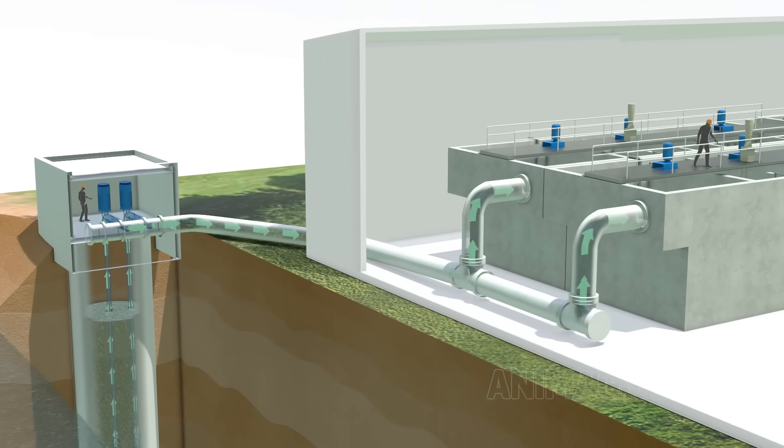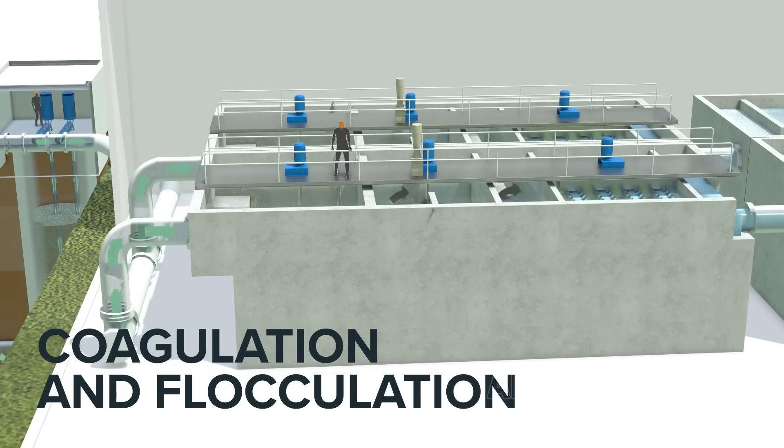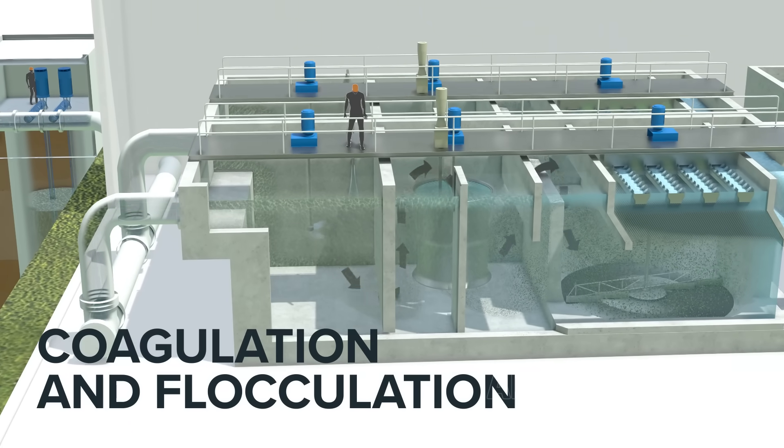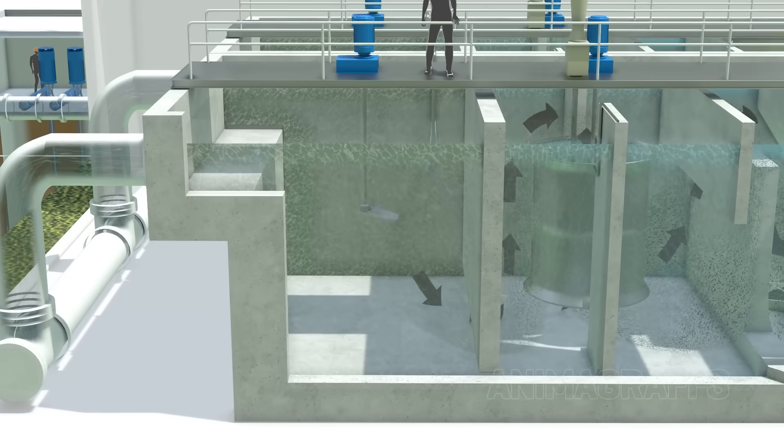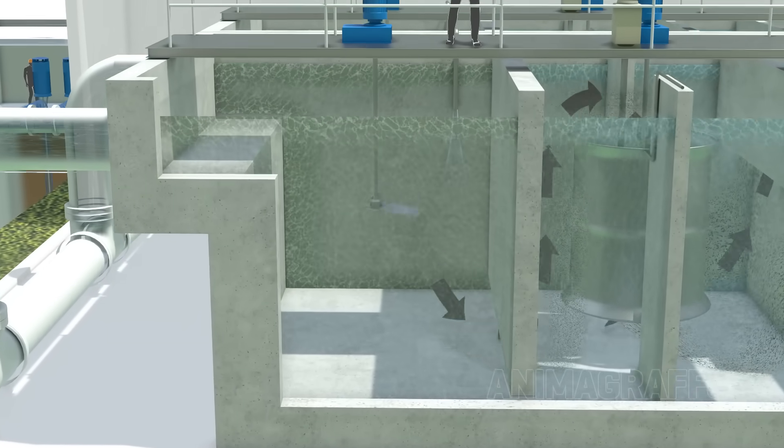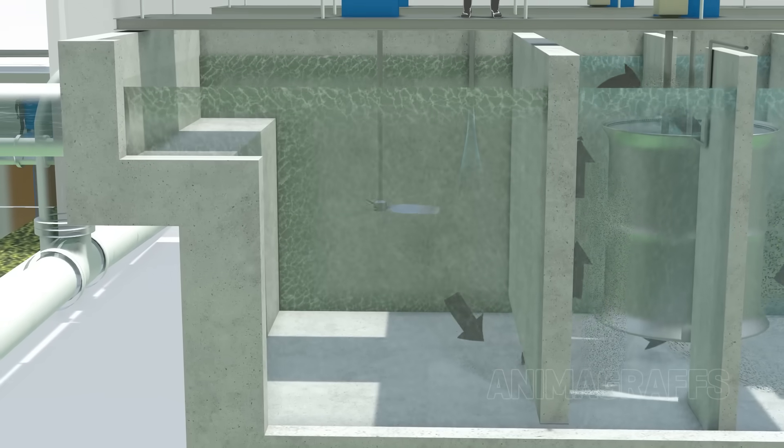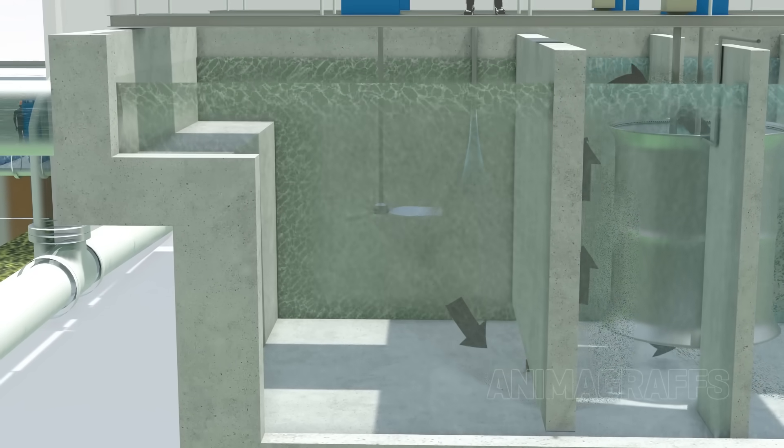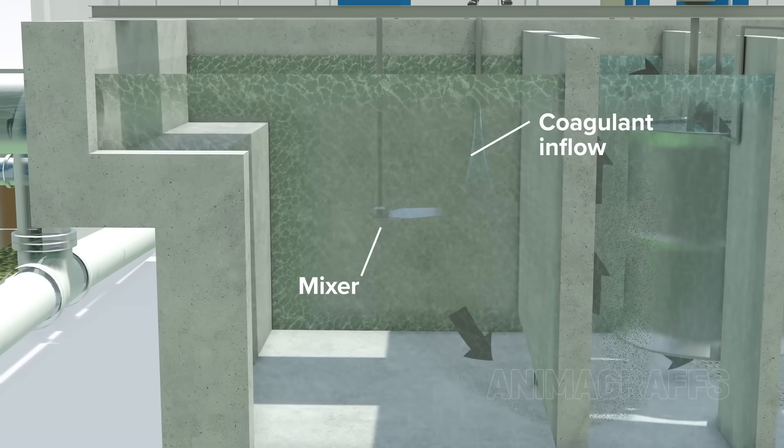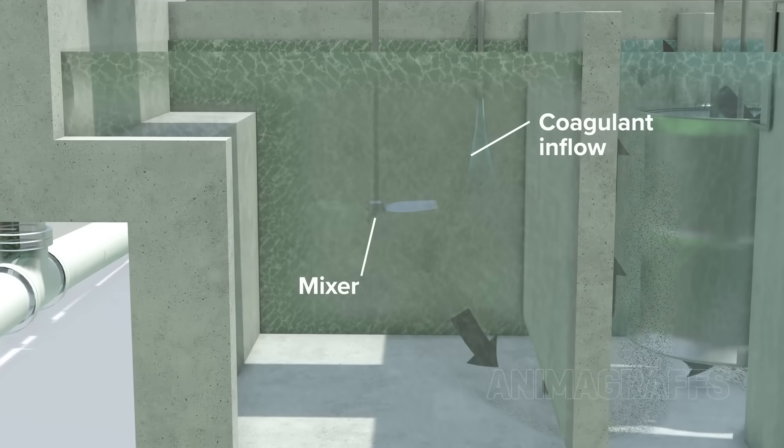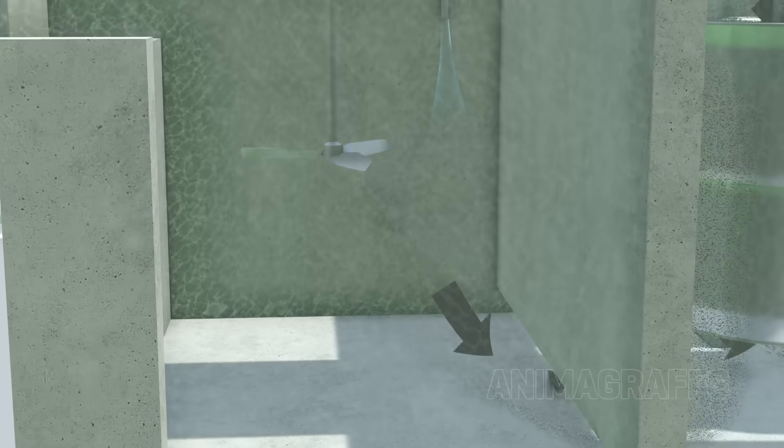The purification process starts with coagulation and flocculation. Particles suspended in water like clay, sand, and some larger organic particles such as algae, have an inherent electric charge that causes them to repel each other. Coagulants are substances with opposite electric charge that neutralize these particles and encourage them to stick together into clumps called flocc.